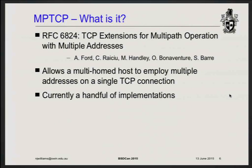So what is Multipath TCP anyway? The easiest way to explain it is: if you have a host that has multiple interfaces or multiple addresses, it allows you to use those addresses on a TCP connection. There are a couple of implementations out there already — the Linux implementation which has become pretty feature-complete and stable, and some commercial implementations like Apple's for Siri, plus Citrix and a couple of other companies that have load balancers or proxies using Multipath TCP.